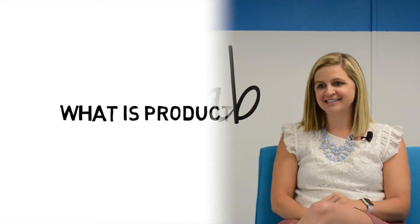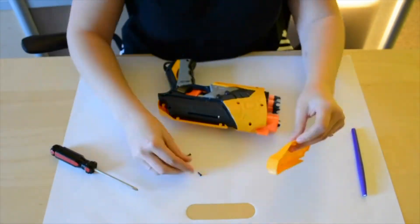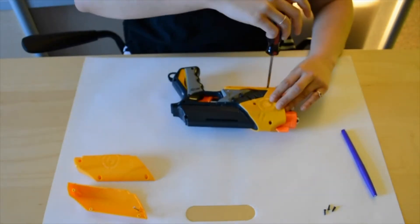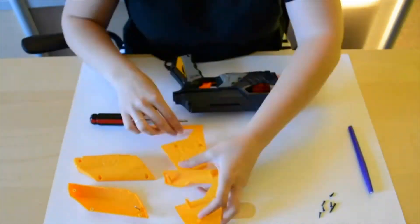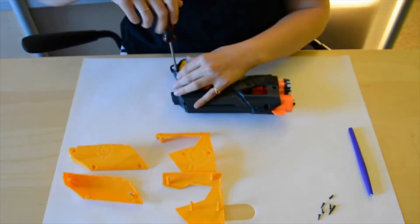Product dissection is the systematic disassembly of a product in order to identify the components and sub-assemblies of a product and how it functions. Product dissection helps students understand the inner workings of a product. We take it apart, we determine what is actually causing things like the spinning motion, how is the device being powered.